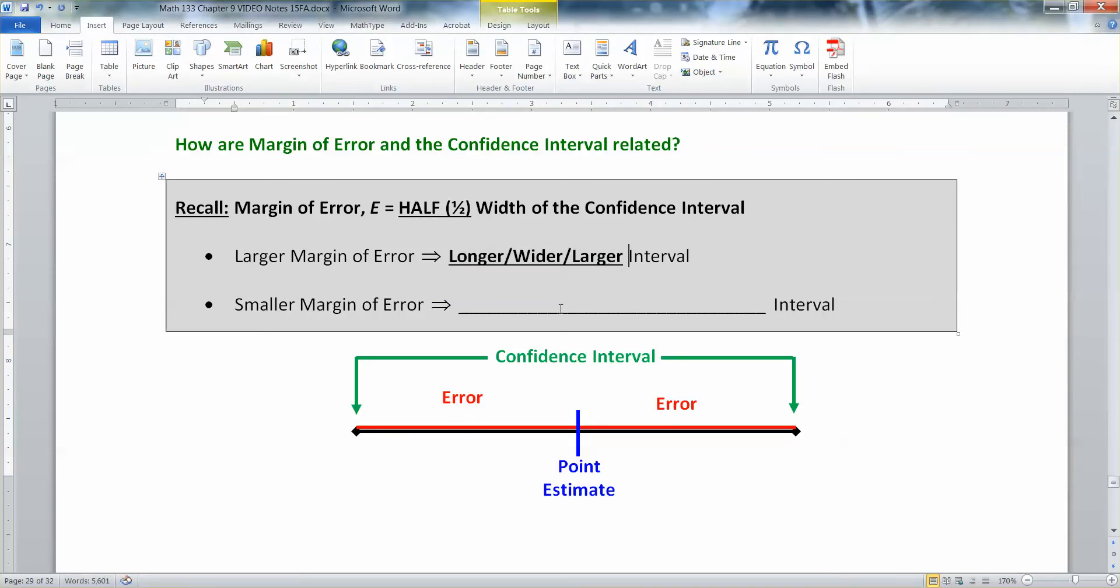By the same token, having a smaller error, if you imagine those red bars shrinking in, that's going to mean you have a smaller, narrower interval, shorter as well.